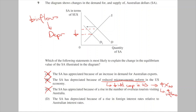That leaves D. If foreign interest rates are higher than Australian interest rates, foreign investors are happy to keep their investments in their own country's banks rather than Australian banks. This means we'll receive less inflows, causing a decrease in demand and a subsequent depreciation. The answer therefore is D.